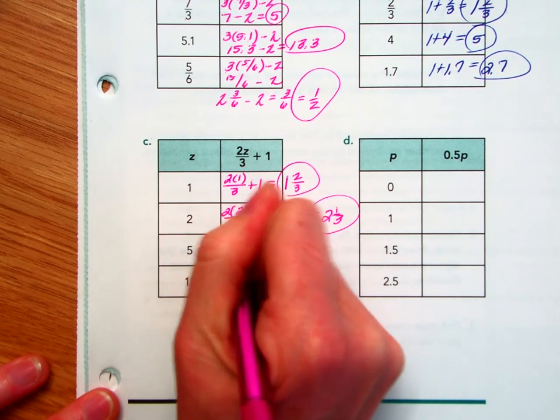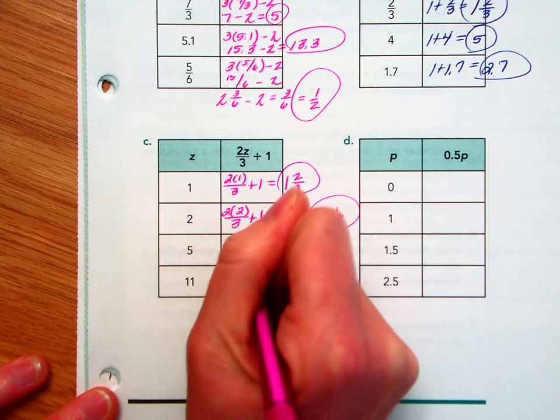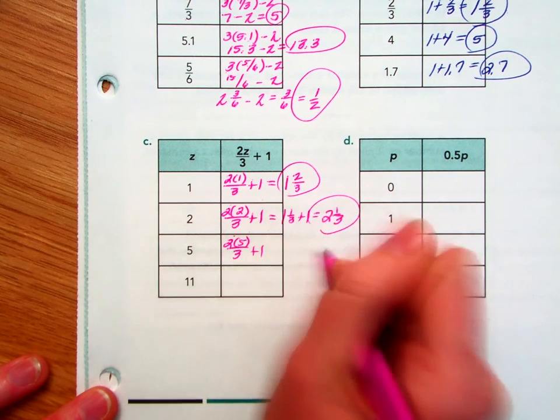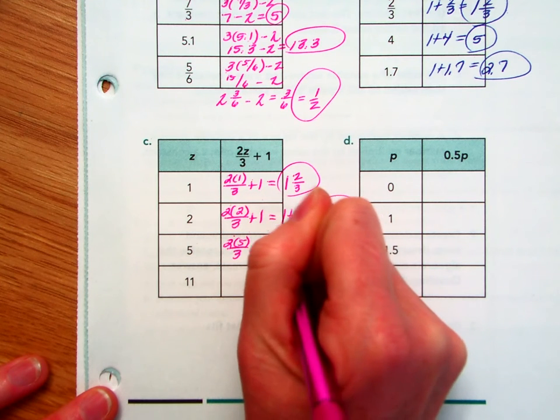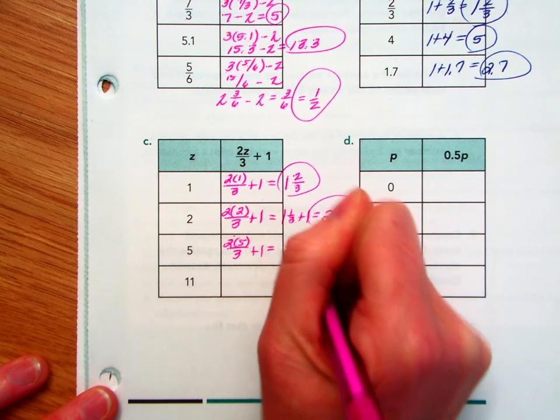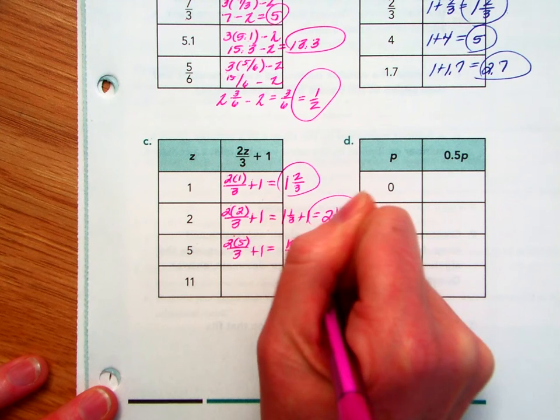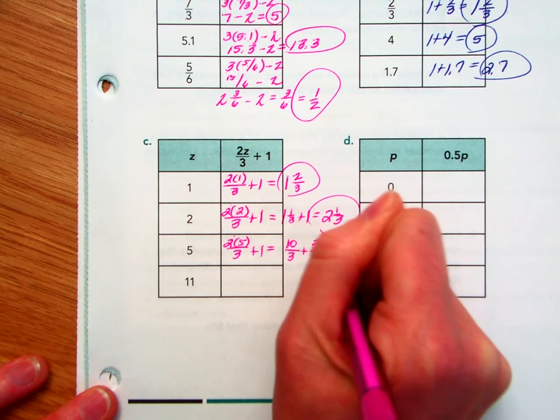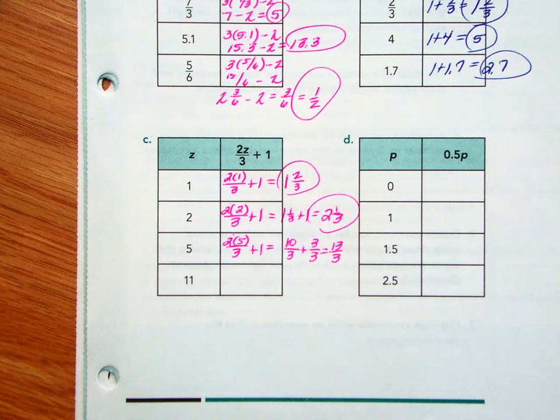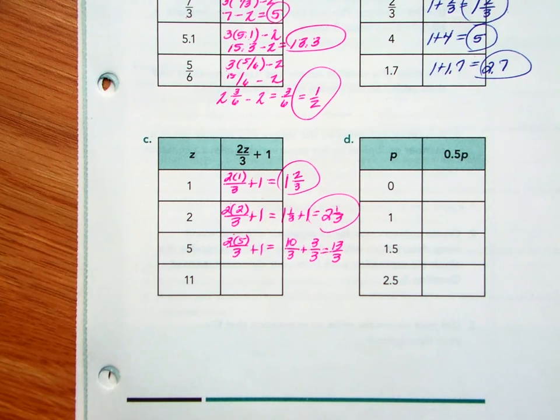We've got 2 times 5 over 3. That's 10 thirds plus 1. 10 thirds plus 1. 1 could be equivalent to 3 over 3. So we've got 13 over 3 would be your improper fraction. And I could simplify that to 4 and 1 third.